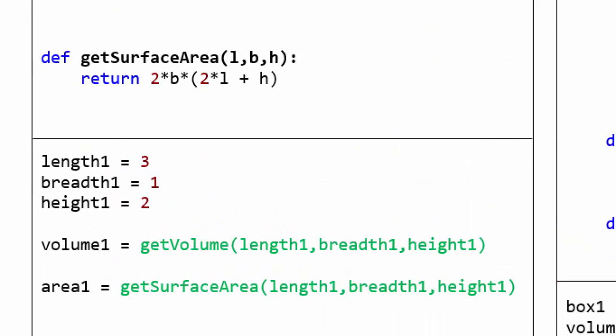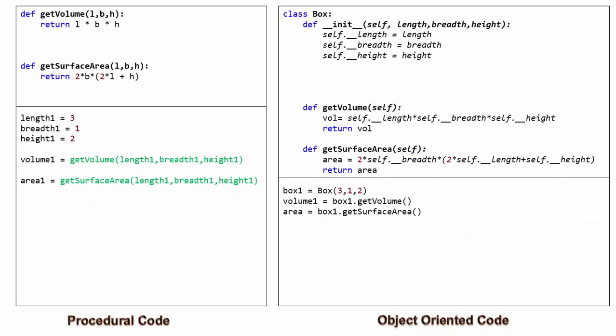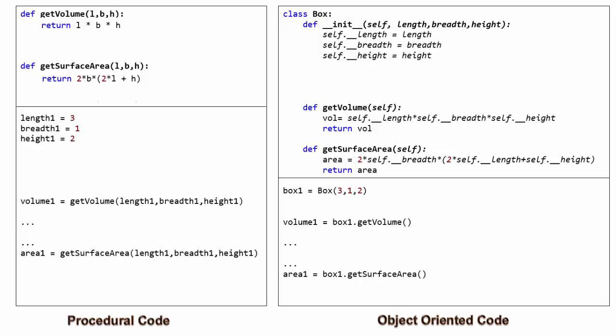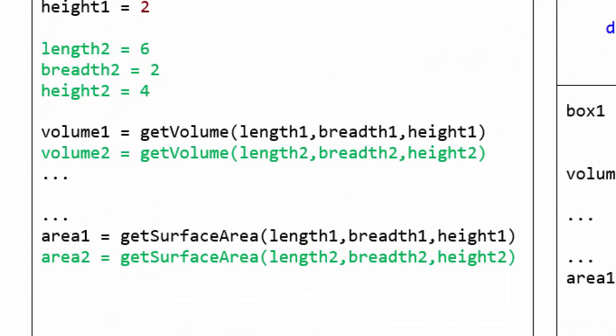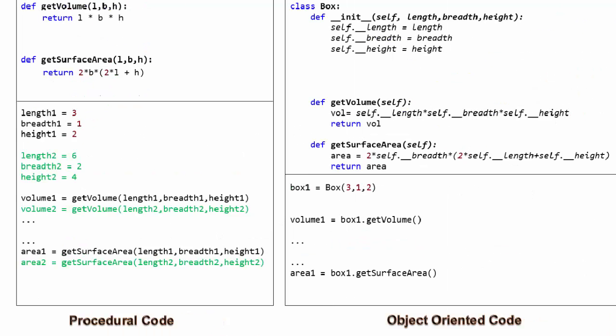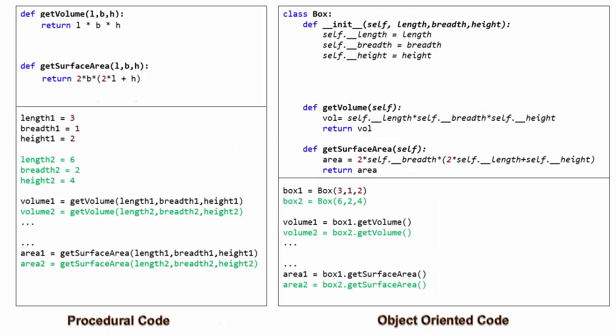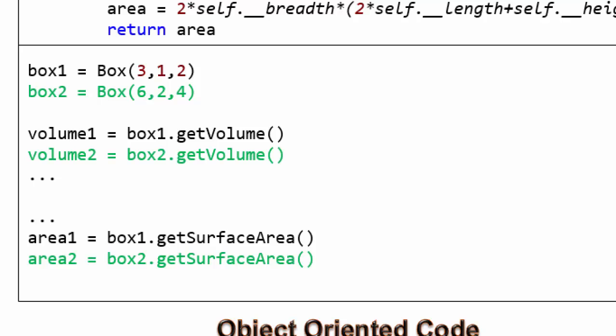However, the data is passed every time from caller since the library functions do not retain the data. It contains only processing logic. Let us see what happens when we want to calculate volume and surface area of two boxes. We need to define two sets of input parameters and call the library functions twice, once for each set. In object-oriented code, we need to create two objects and call their instance methods.